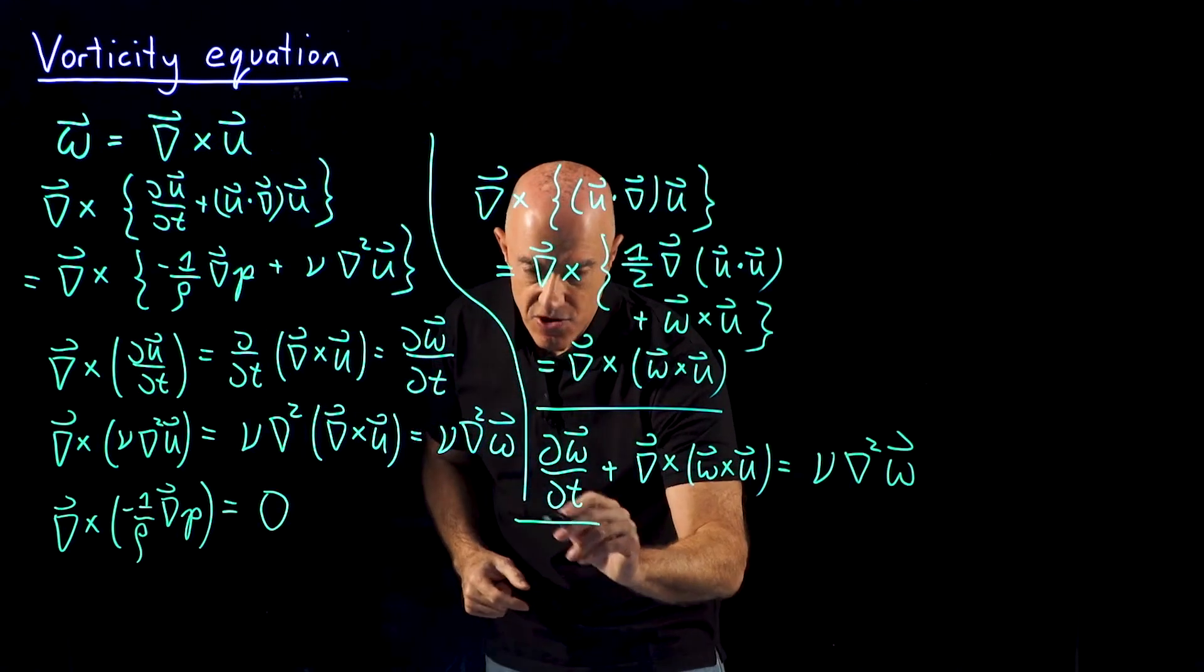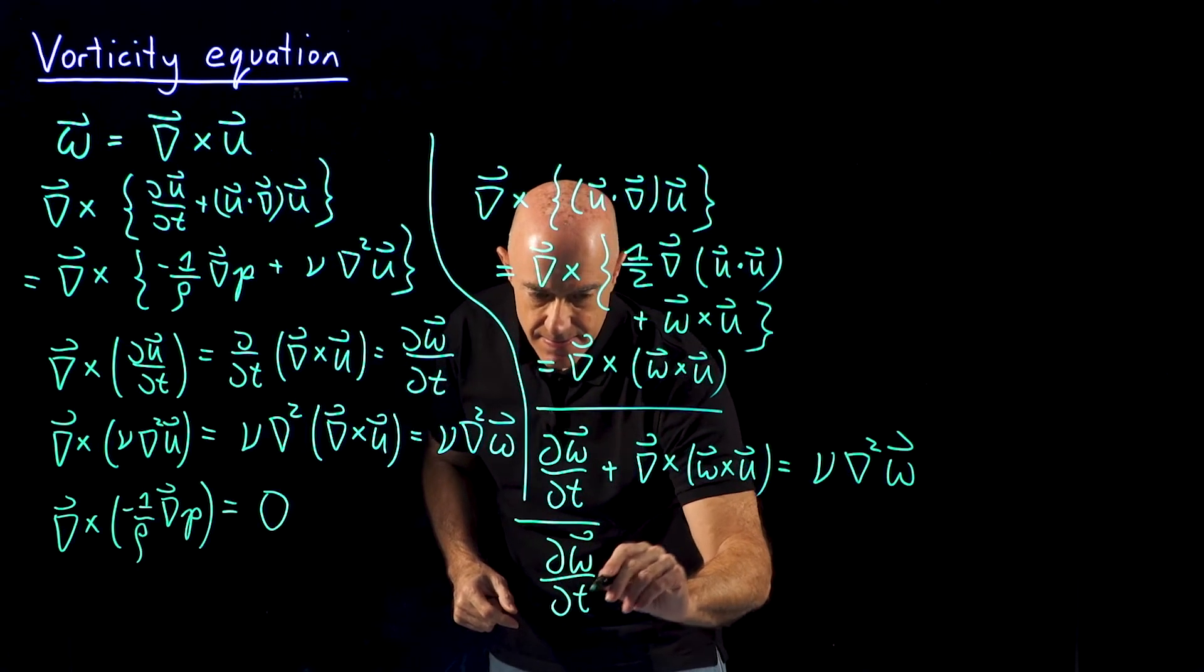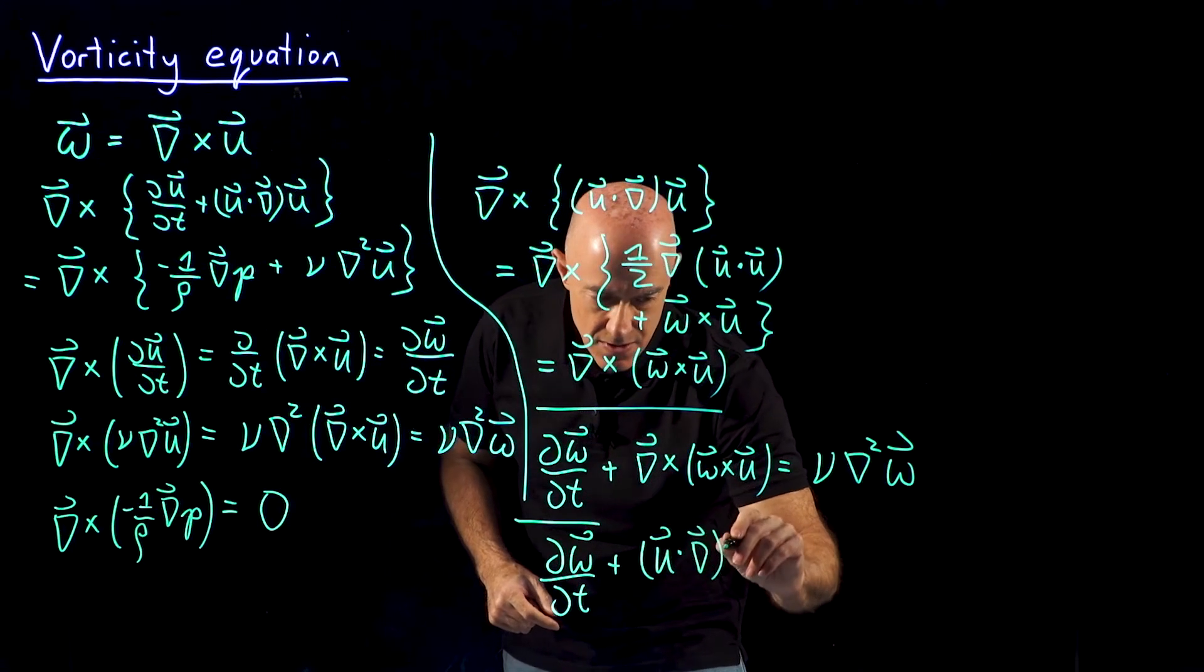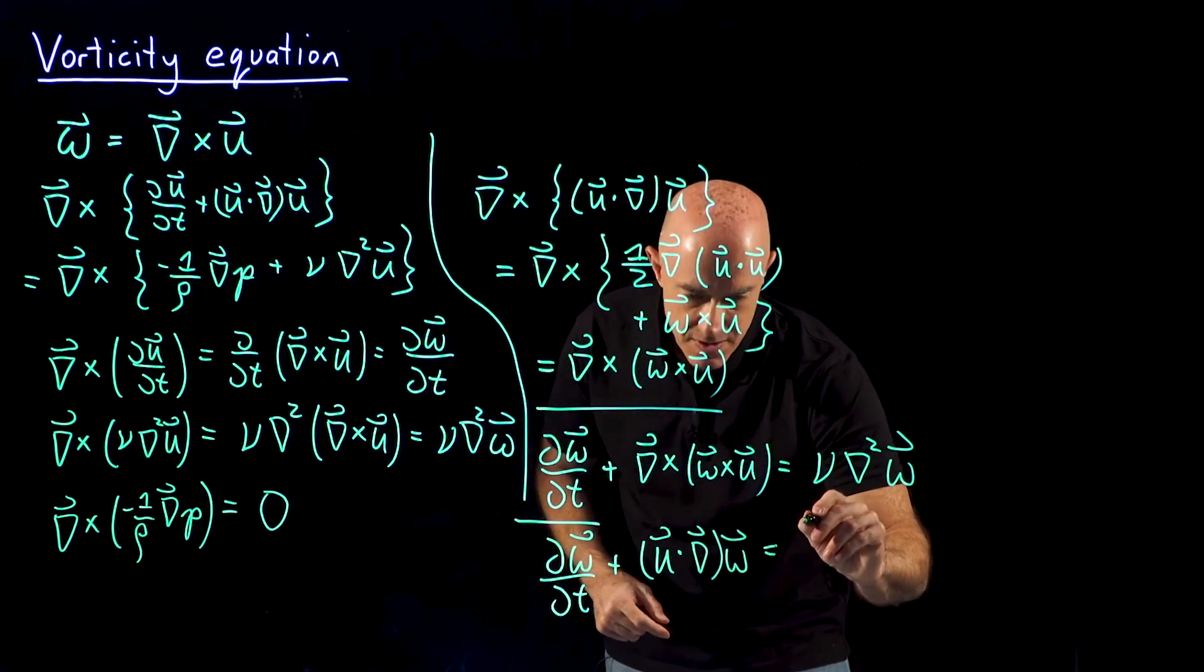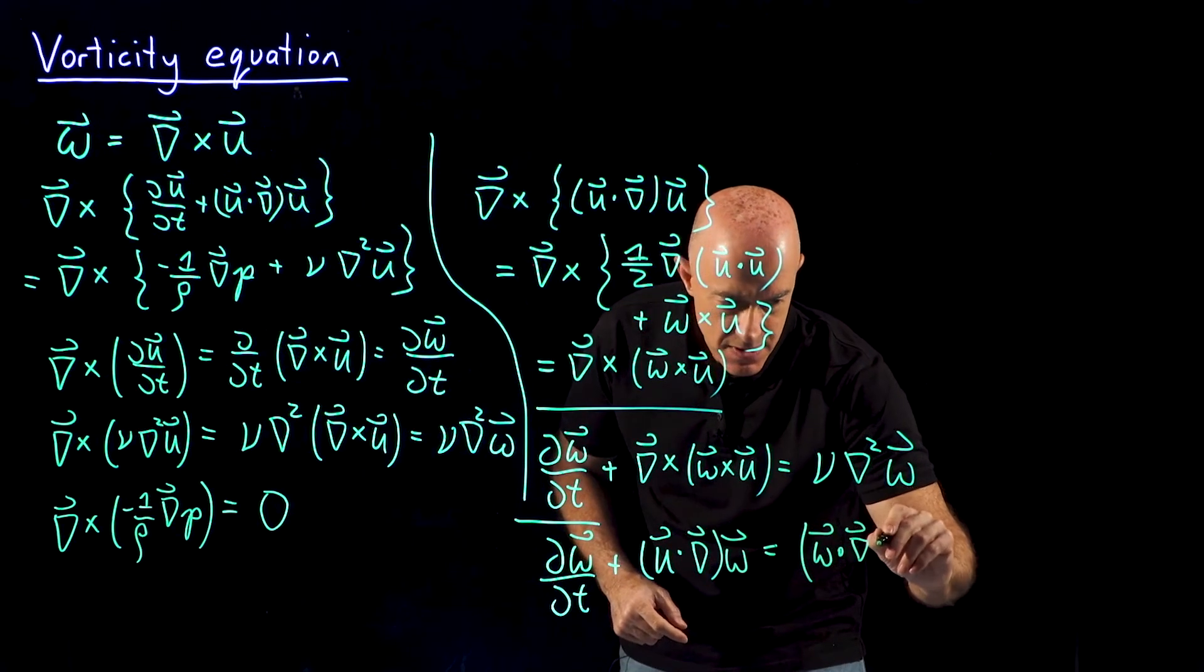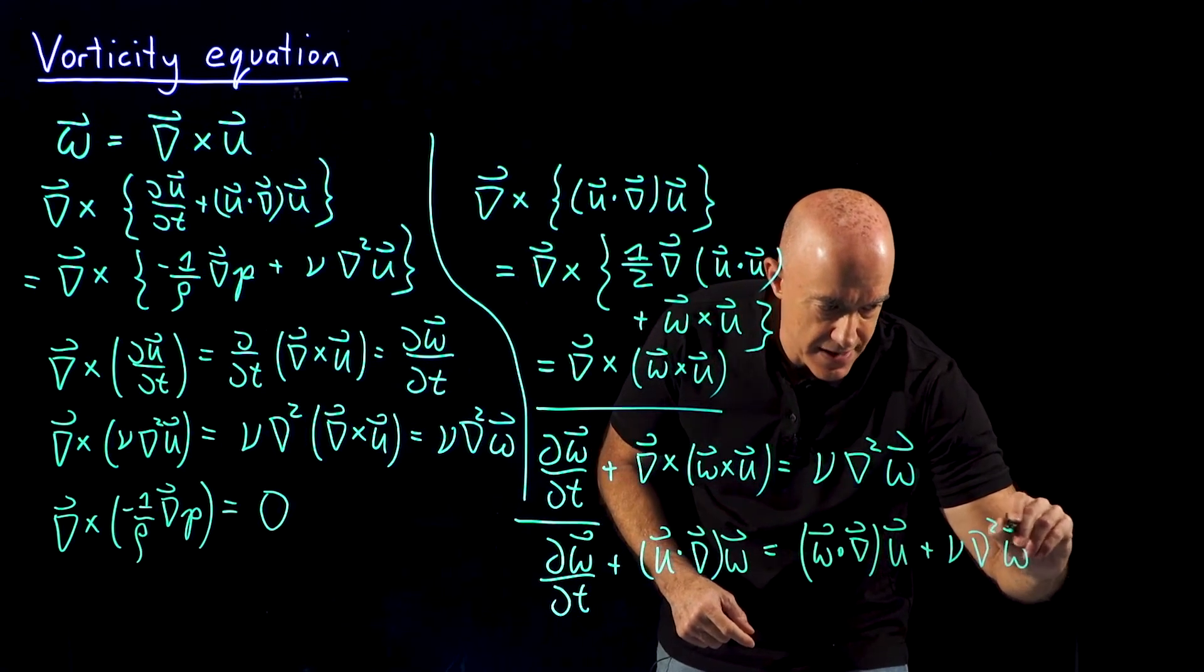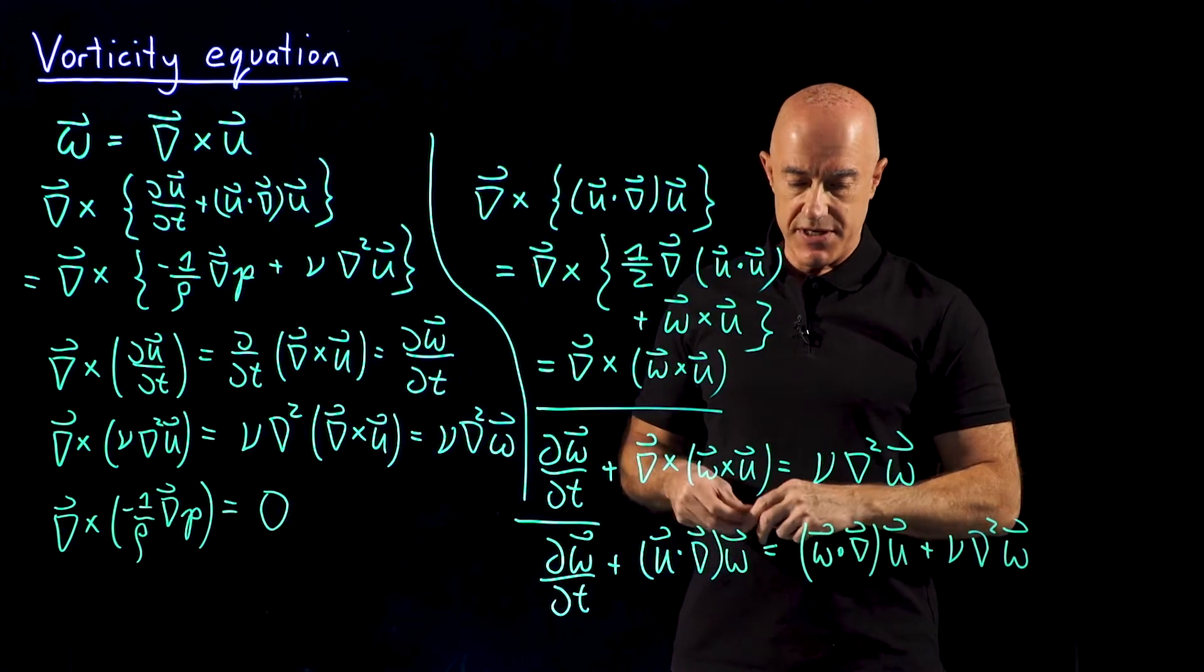we get a second form of the vorticity equation, which is d omega dt plus u dot del omega equals omega dot del u plus nu del squared omega. And that's a second form of the vorticity equation.